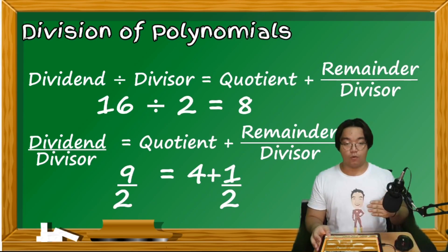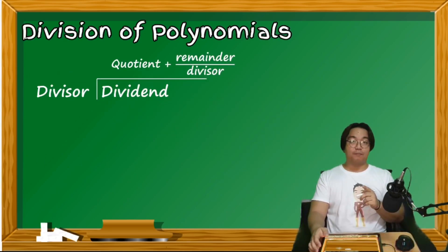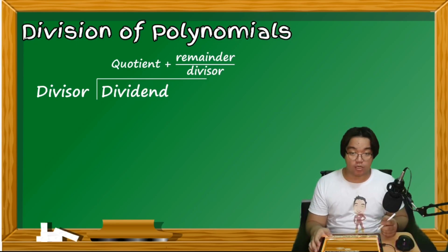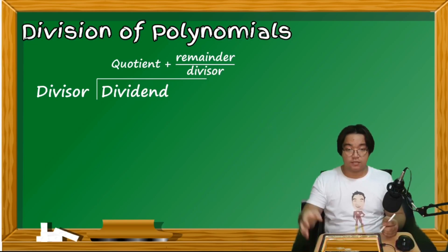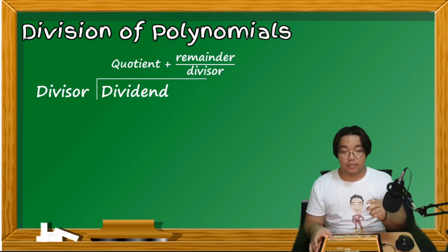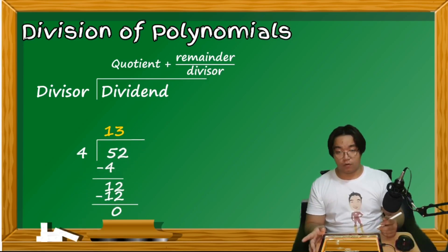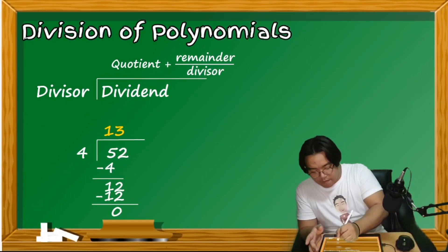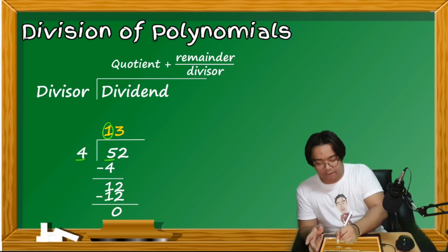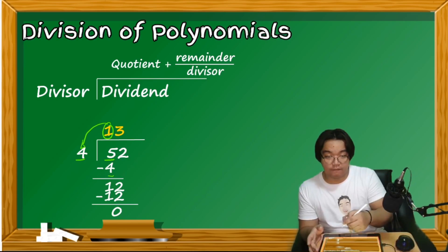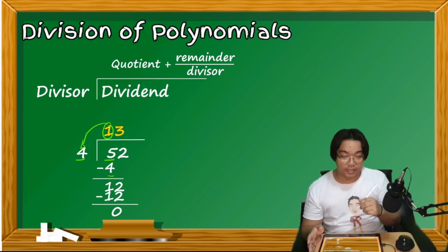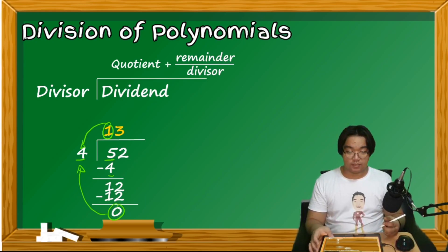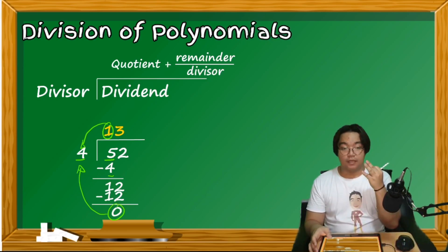When dividing a polynomial with a two-or-more term polynomial, we use long division — the same process learned in lower grades. For example, dividing 52 by 4: first divide 5 by 4 to get 1, multiply 1 by 4, write it under the 5, subtract to get 1, bring down the next digit, and repeat until you get a number less than the divisor. The process is: divide, multiply, subtract, bring down, then repeat.